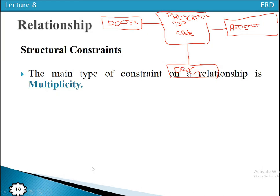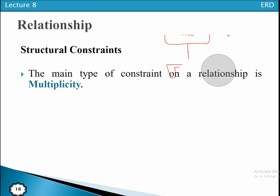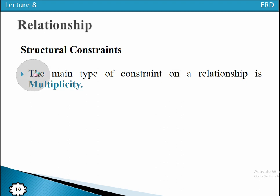Now we have the concept of structural constraints. A structural constraint is a constraint placed on the entity types that participate in a relationship. Whenever we have different entity types participating in a relationship, we place some constraints — some set of rules. The main type of constraint on a relationship is multiplicity.